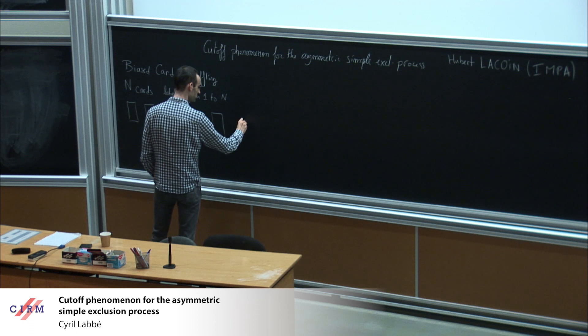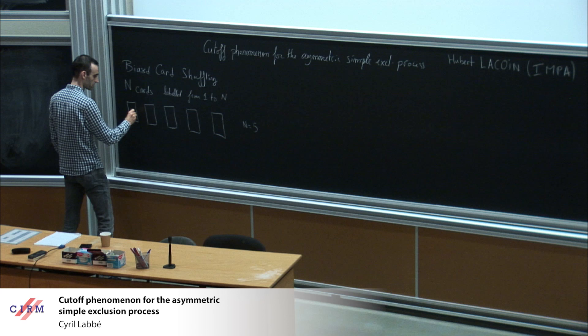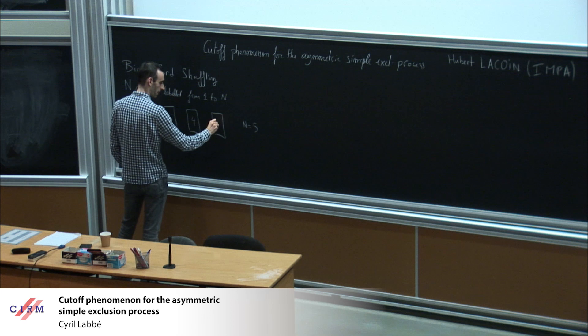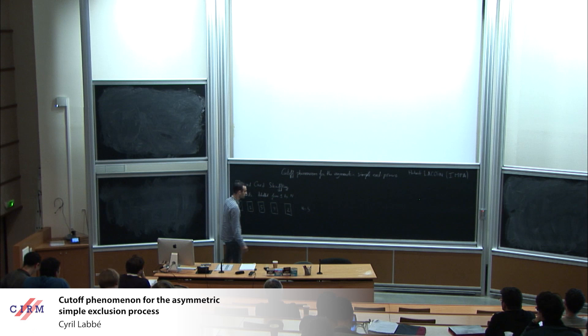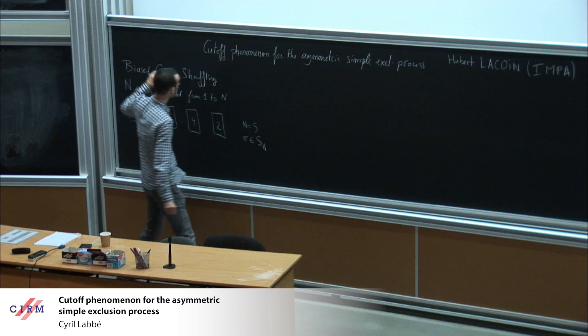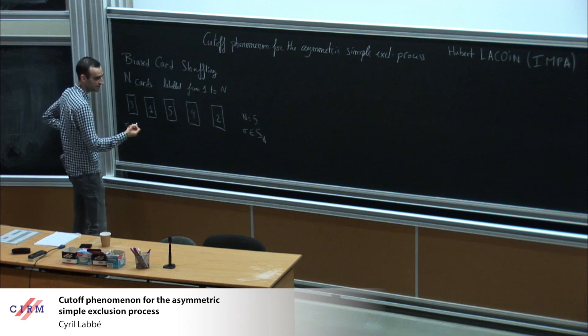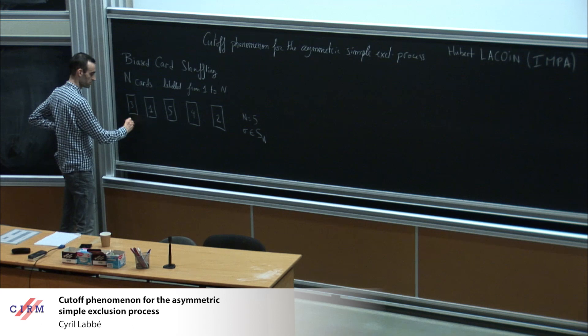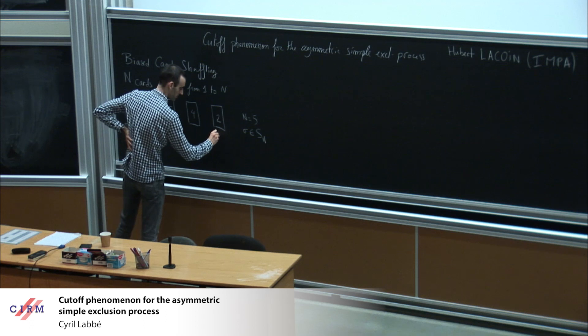Here n is equal to five, and each card has a label. I can encode such a configuration of cards with a permutation of {1,...,n}. Here sigma_i is basically the label of the card at position i. So sigma_1 is 3, sigma_2 is 1, sigma_5 is 2.